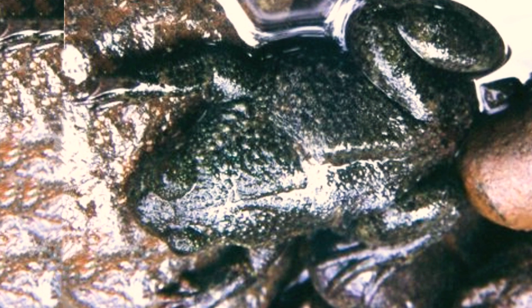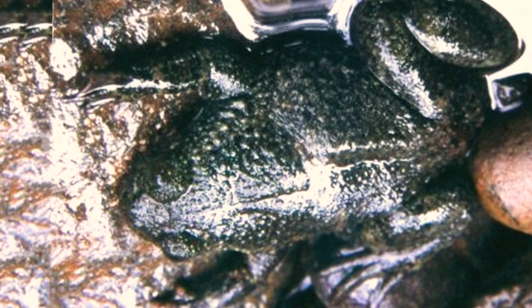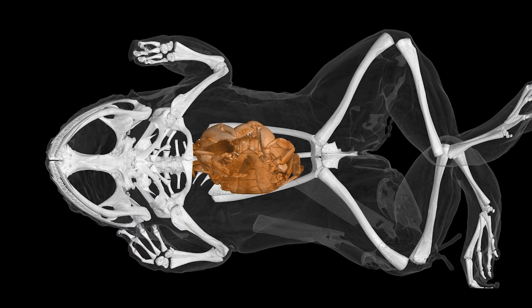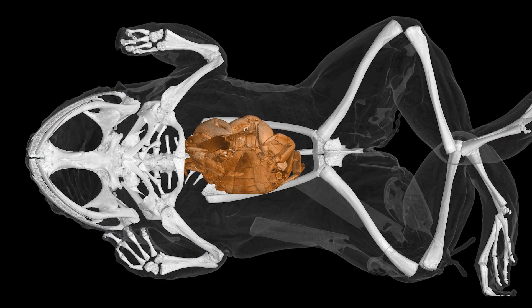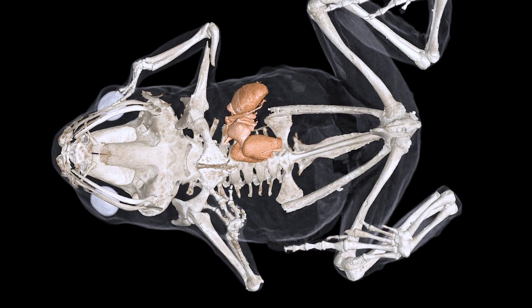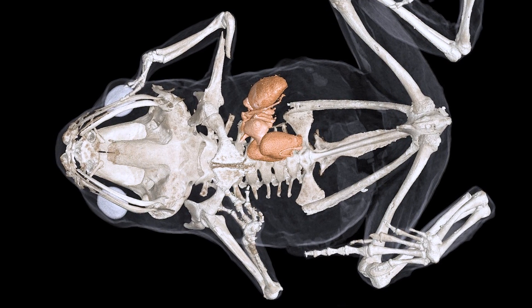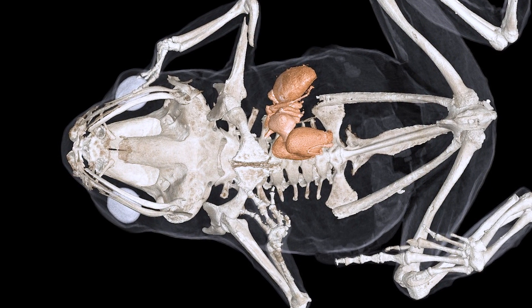They can also help scientists understand new quirks about animal diets and lifestyles, such as this Philippine flat-headed frog that ate a crab before being preserved, or this other frog that's so tiny the ant inside its belly is almost as big as its head.